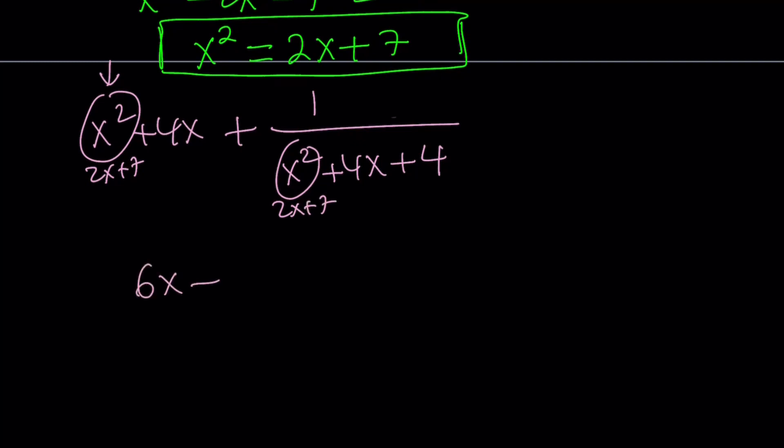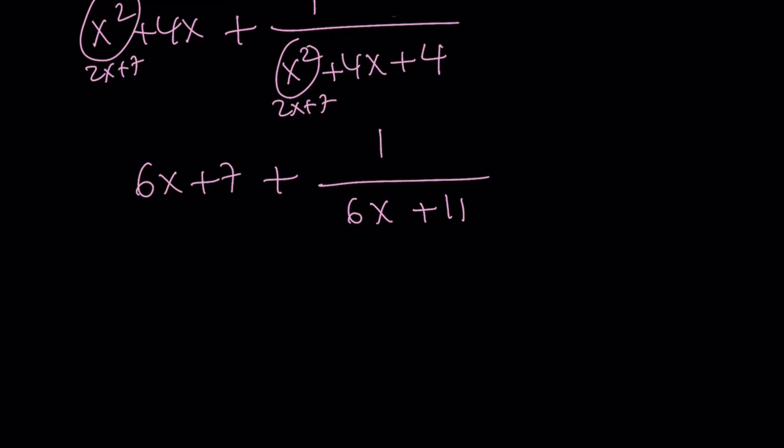I get 6x plus 7 plus 1 over 6x plus 11 because I have 7 plus 4, right? And then, let's make a common denominator. This is what I meant by you'll keep seeing it. If you multiply 6x plus 7 by 6x plus 11, you're going to get 36x squared. And now, you're going to get plus 66x plus 42x. That is going to give you 108x. And then, plus 77, but then, plus 1, that is going to be 78. Okay, this is what I'm getting from here, right? Hopefully.